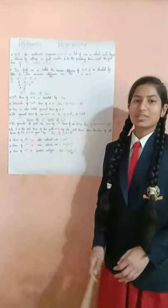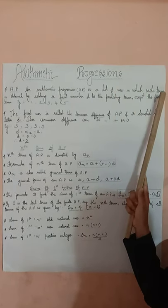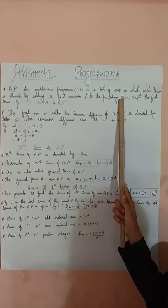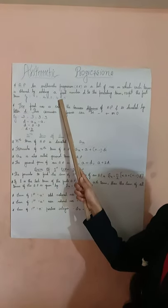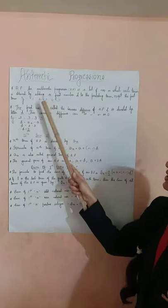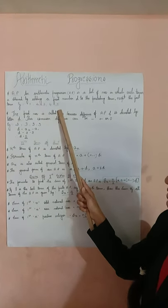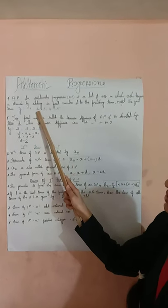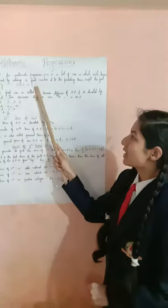So, what do we mean by Arithmetic Progression? Arithmetic Progression is a list of numbers in which each term is obtained by adding a fixed number d to the preceding term, except the first term. Example: 1, 2, 3, 4, 5 and so on. Here in the example you can see that each number is obtained by adding a fixed number, that is 1, to the preceding term — so 1 plus 1 is 2, 2 plus 1 is 3, 3 plus 1 is 4, and so on. So this is Arithmetic Progression.